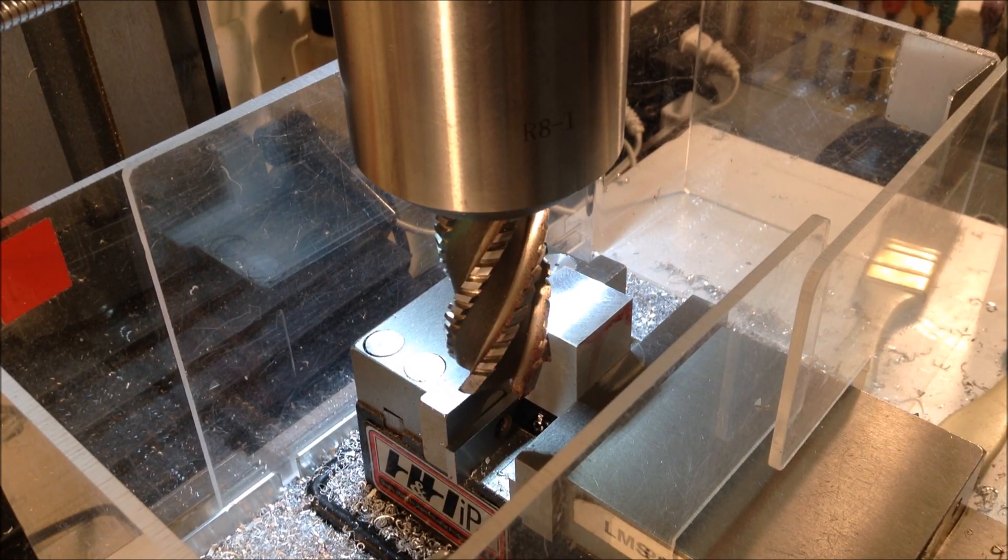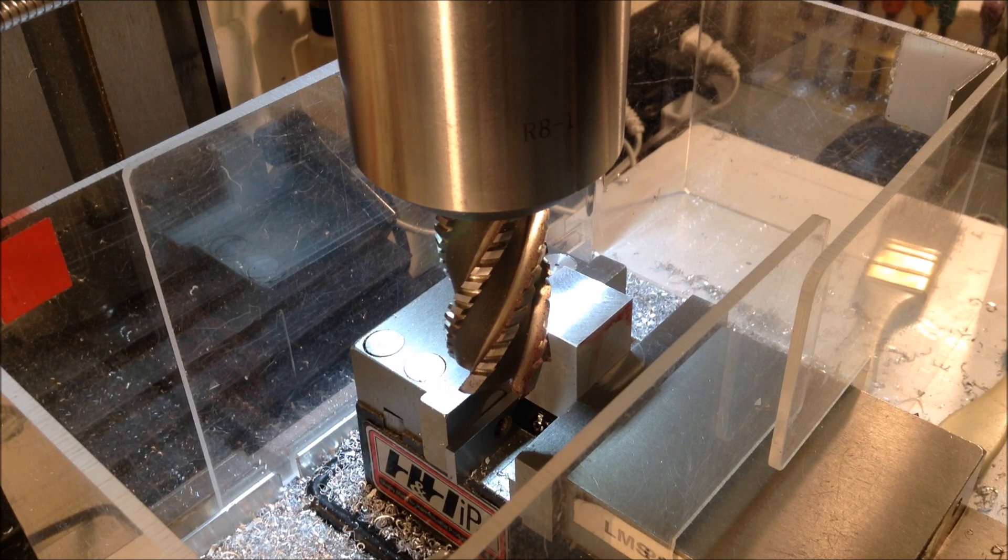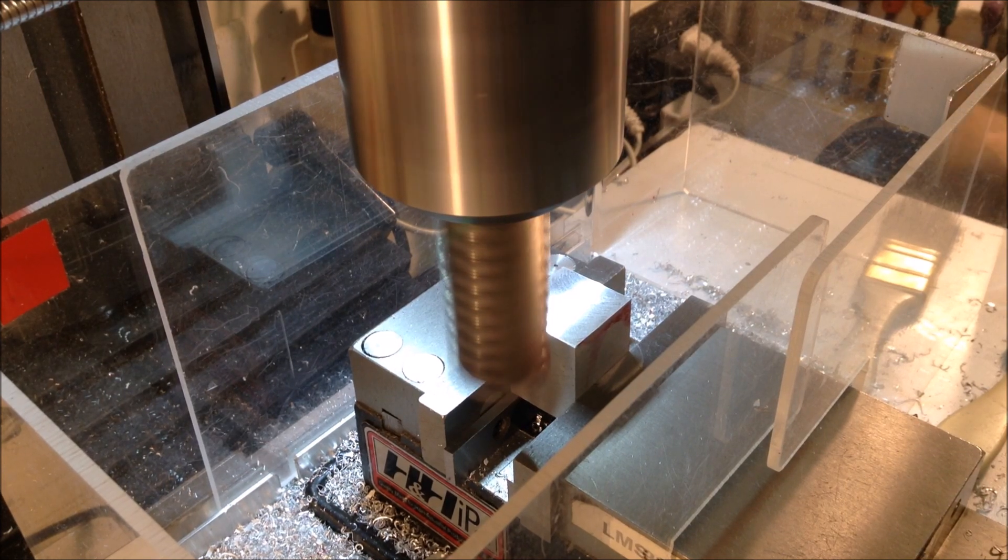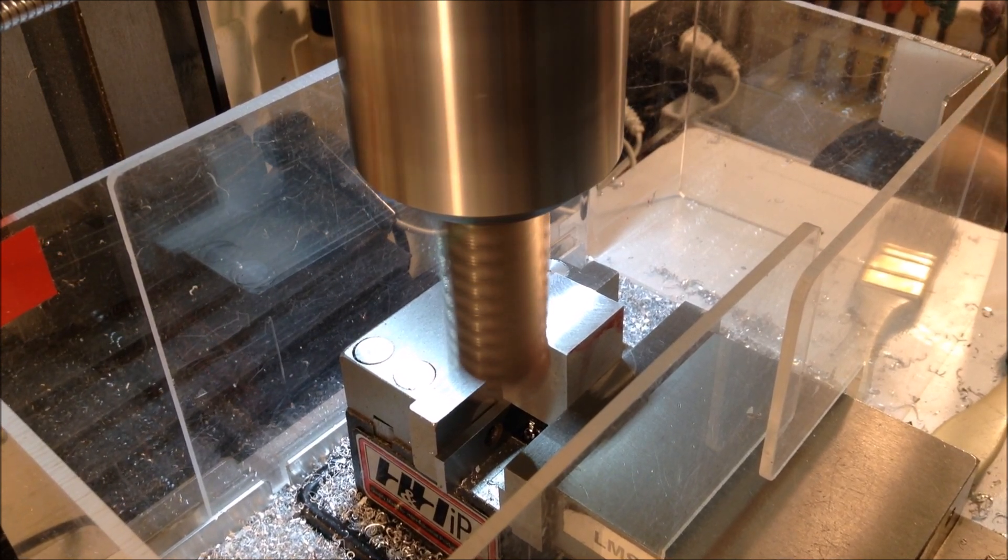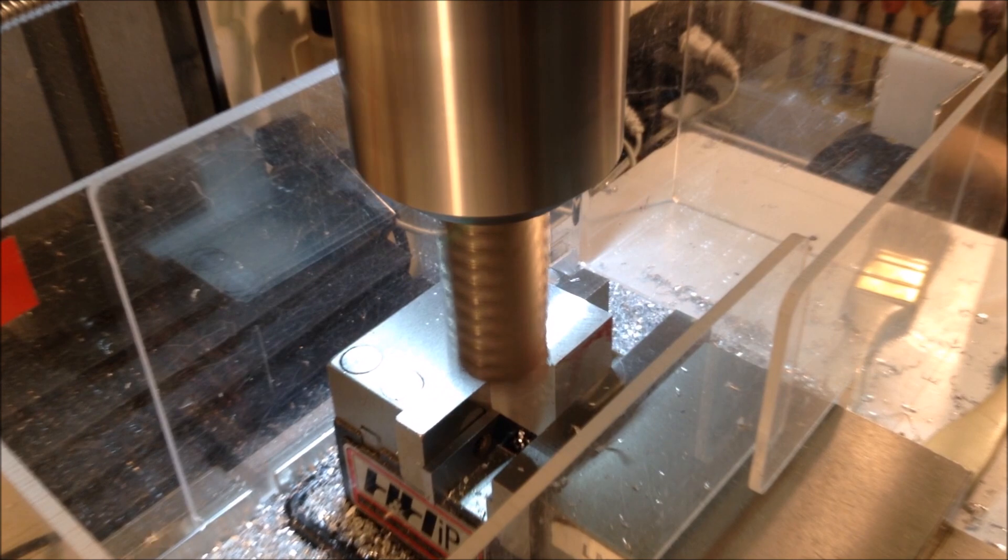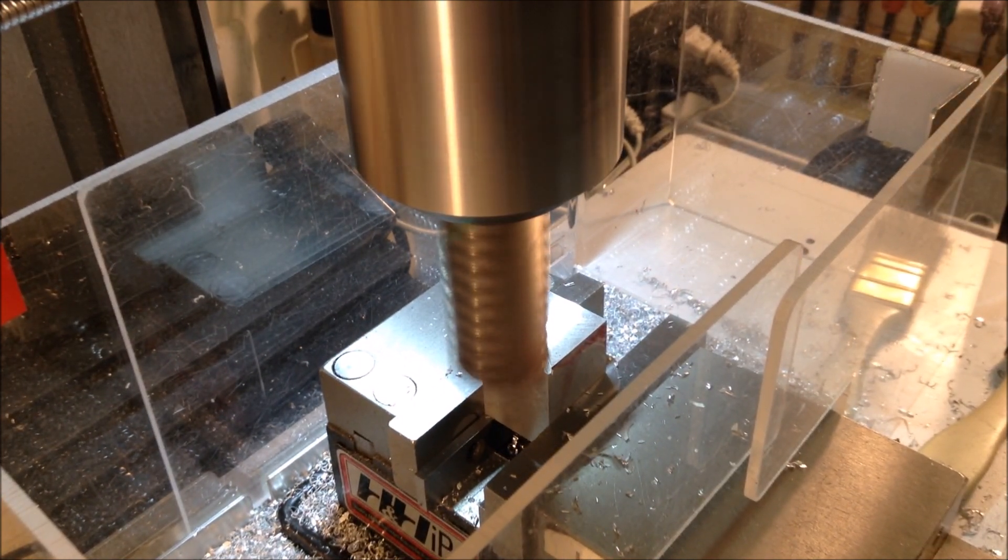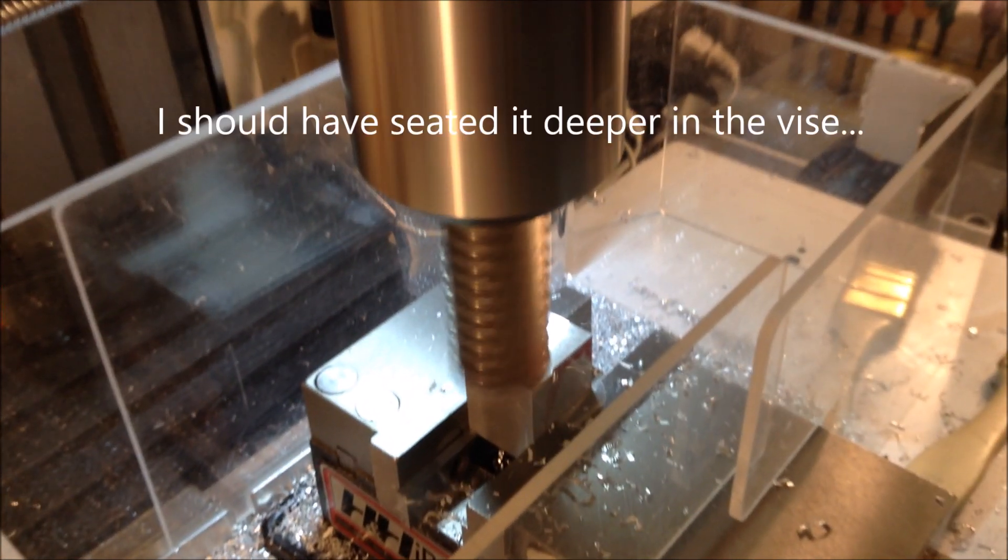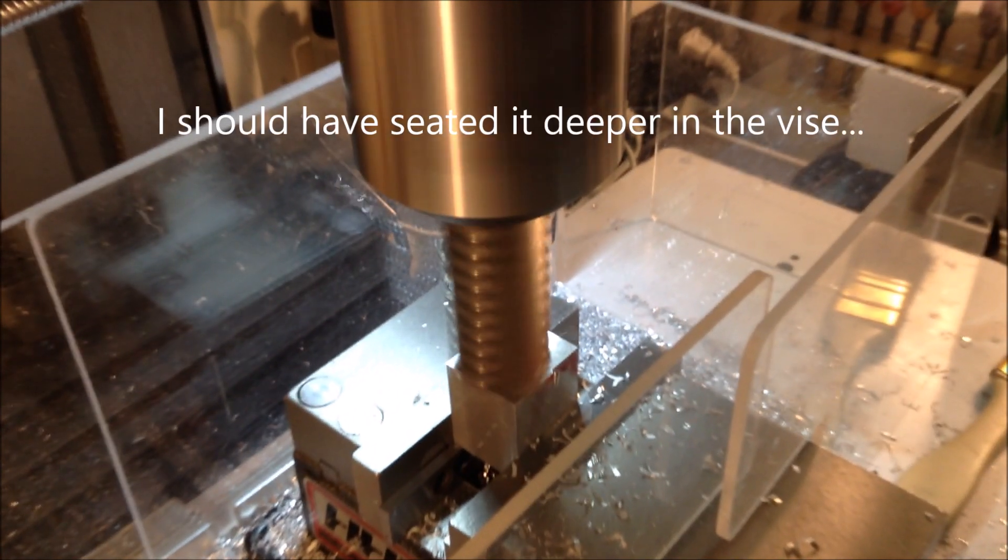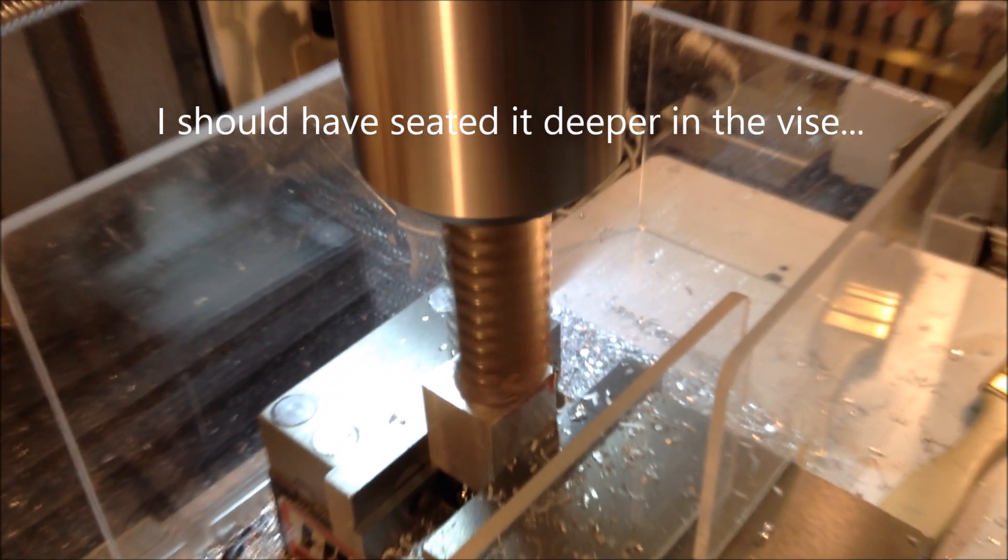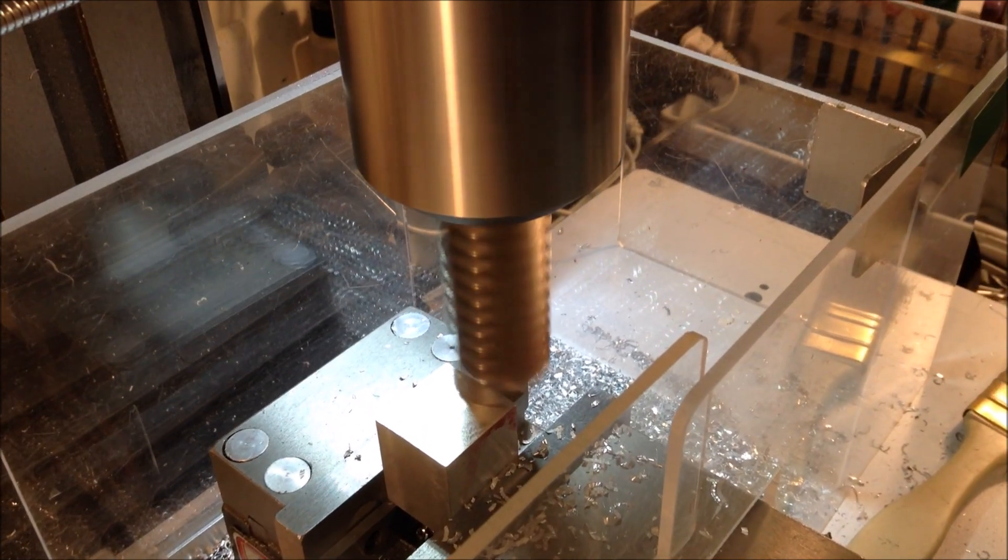Now we'll just cut it down a half a millimeter at a time. I could probably go to a millimeter I guess, let's try a millimeter and see how much it complains. I'm gonna turn it by hand at first and just see how much it does. And it's not real happy about it but let's try it. And I guess we'll stick with half a millimeter.